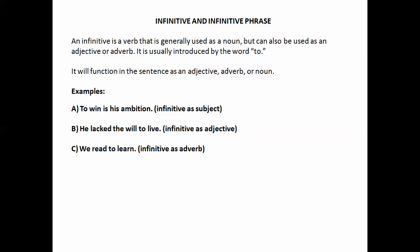The third type of verbal is an infinitive. An infinitive is a verb that is generally used as a noun, but it can also be used as an adjective or an adverb. It is usually introduced by the word to. For example, to win is his ambition. Here if you're looking for the subject of the sentence and you say what is his ambition, the answer is to win. He lacked the will to live. Here, the infinitive to live is telling you what kind of will. So it's an adjective. It answers an adjective question, what kind.